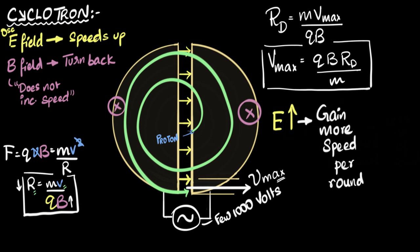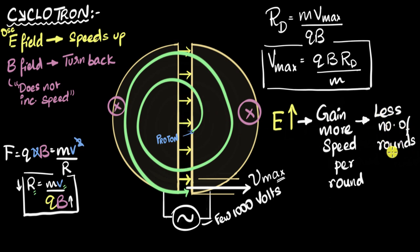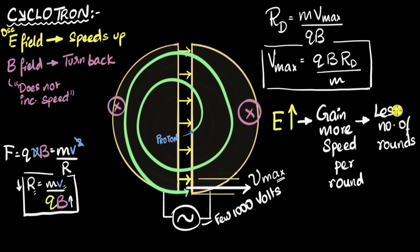These two effects counteract each other, and it turns out they nullify each other exactly. That's why increasing the electric field has no effect on the maximum speed. The same thing happens if you decrease the electric field — it gains less speed per round, but it takes more spirals and has more rounds, so again the two effects counteract and the maximum speed remains the same. It is independent of the electric field.